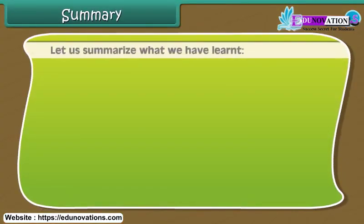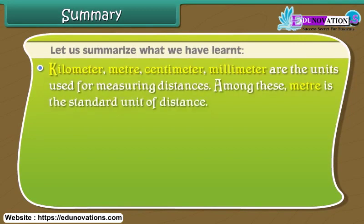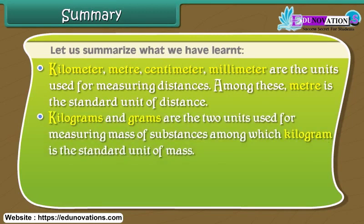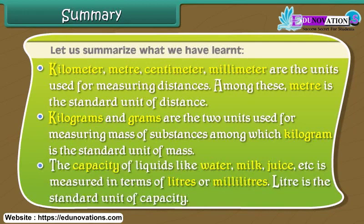Let us summarize what we have learned. Kilometer, meter, centimeter, and millimeter are the units used for measuring distances. Among these, meter is the standard unit of distance. Kilograms and grams are the two units used for measuring mass of substances, among which kilogram is the standard unit of mass. The capacity of liquids like water, milk, juice, etc. is measured in terms of liters or milliliters. Liter is the standard unit of capacity.